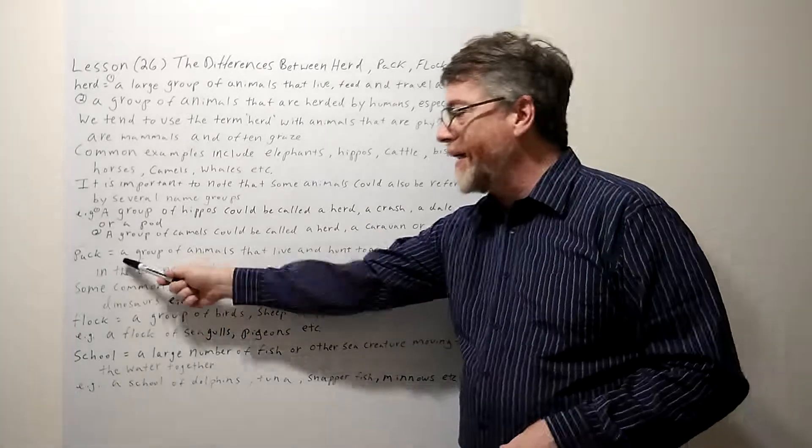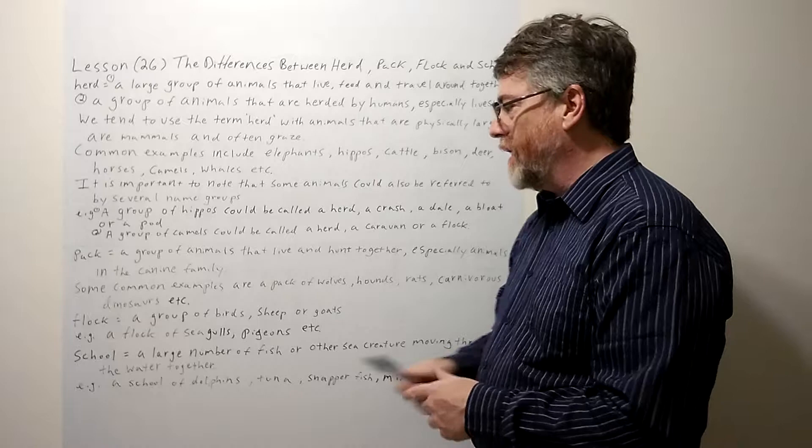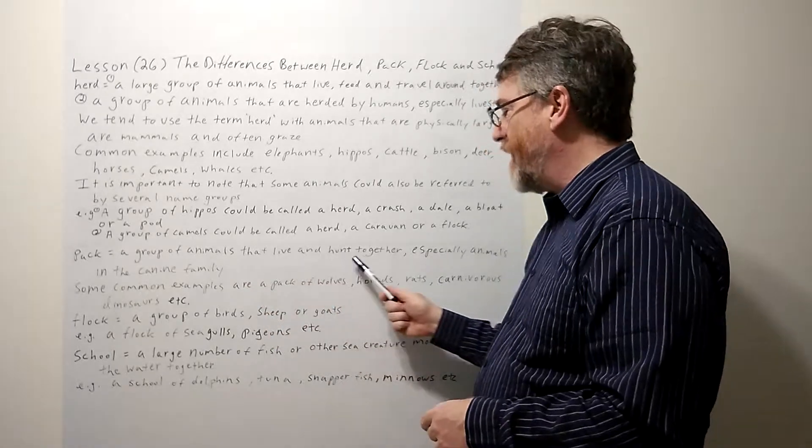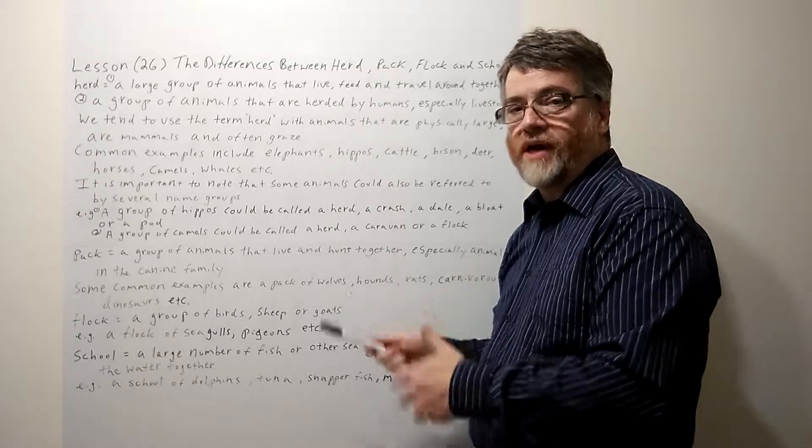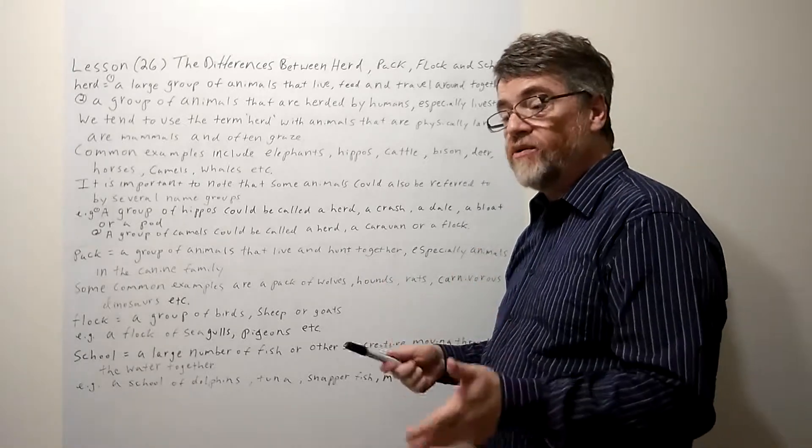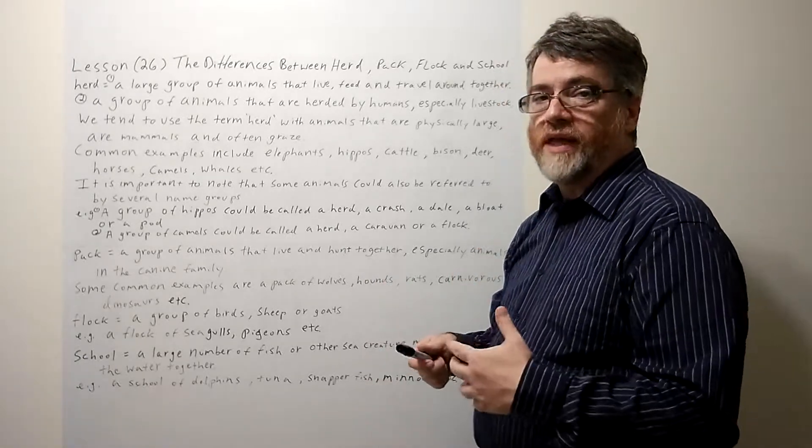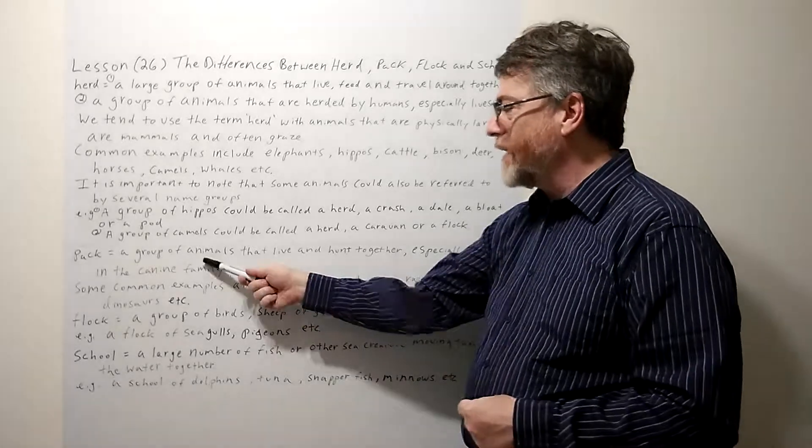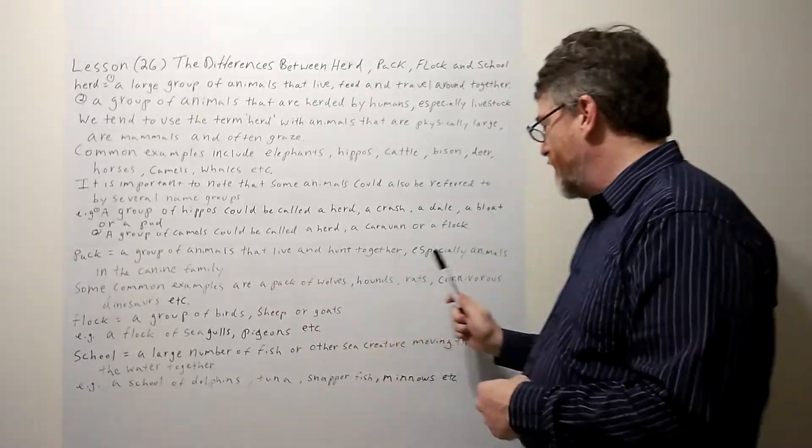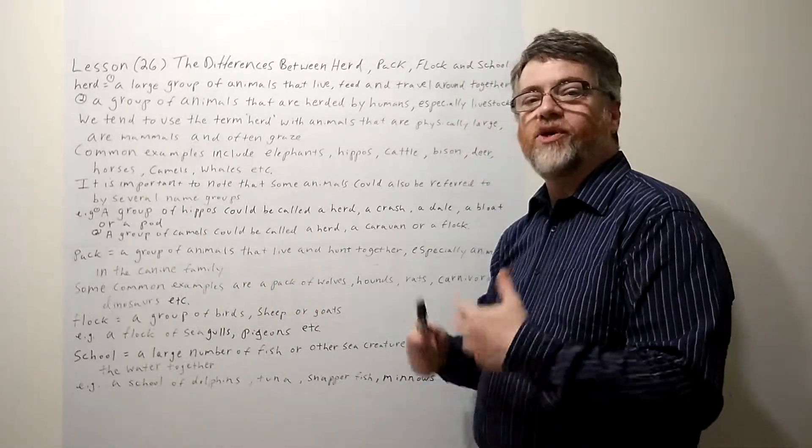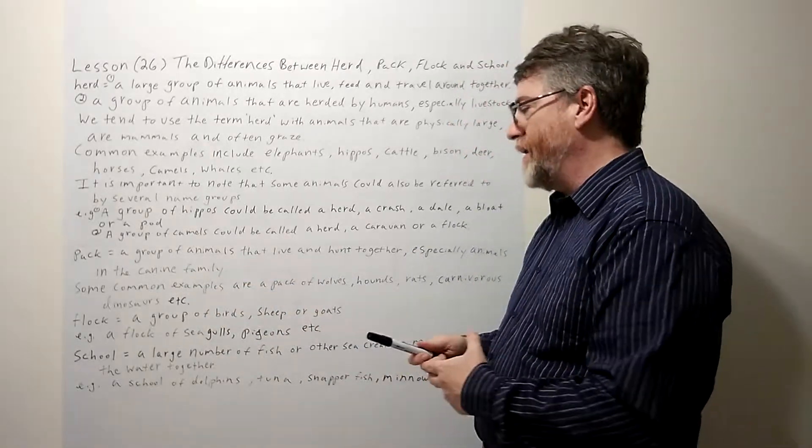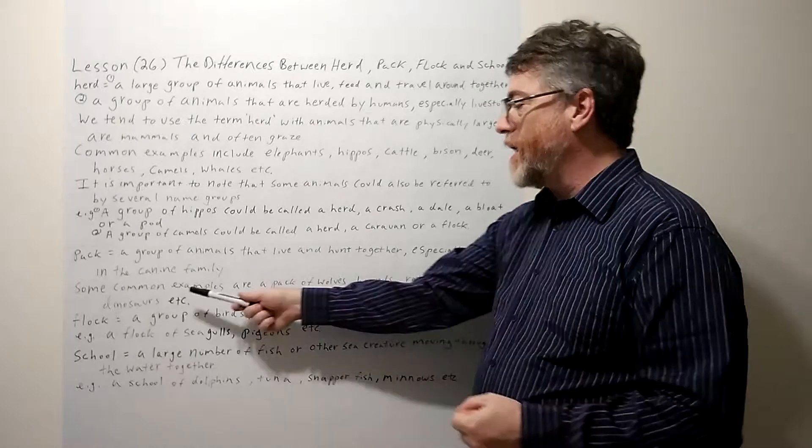If we talk about pack, what kind of group is a pack? A group of animals that live and hunt together. A herd does not necessarily hunt together—they live together and they may eat or drink together, but they don't really hunt. Packs usually hunt, especially animals in the canine family, so the dog family.